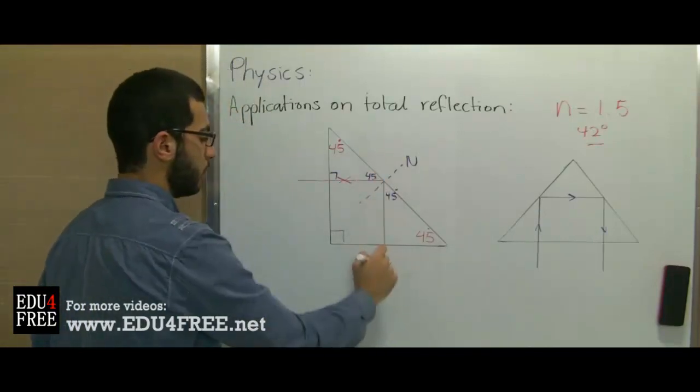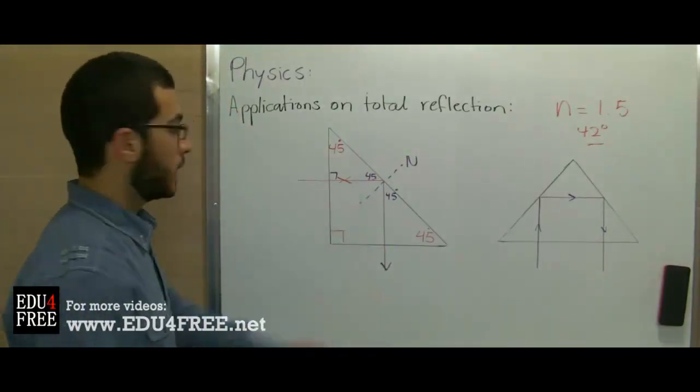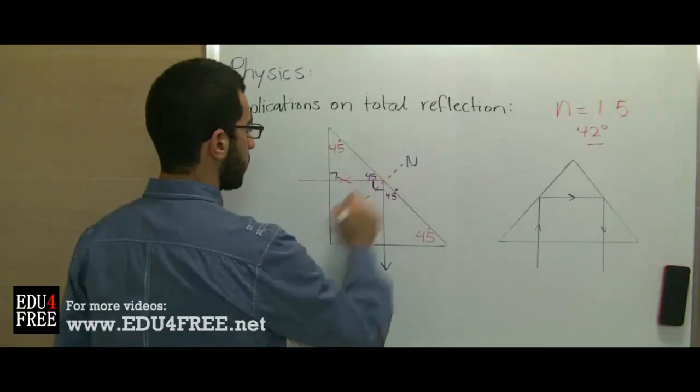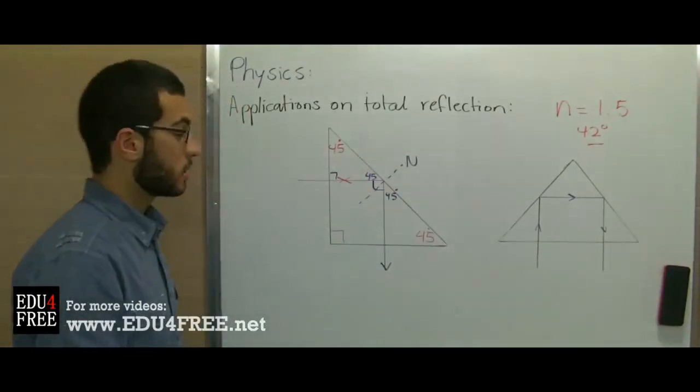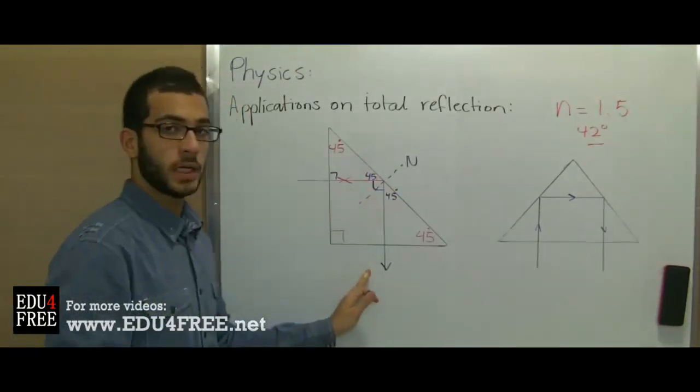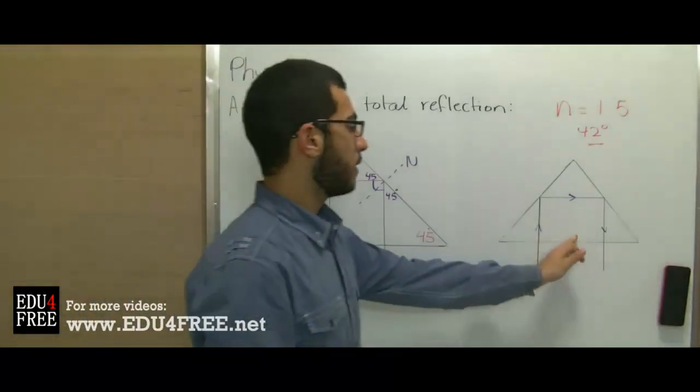So the light ray will go in this path. This angle accordingly will be 90 degrees. So here light is reflected by 90 degrees.